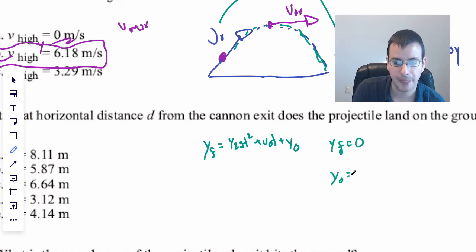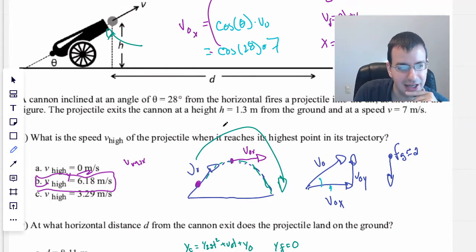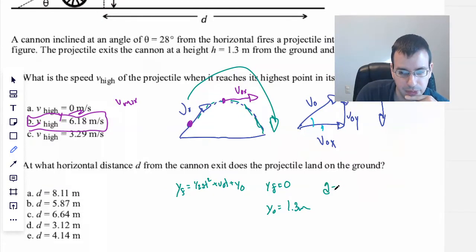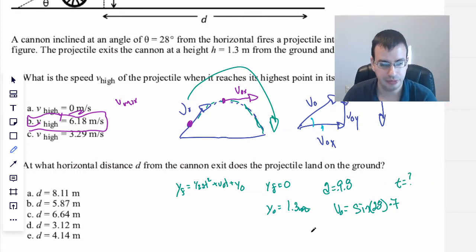So we have our kinematic equations. Now x here just means some sort of dimension, a direction. So we can use this for x or y or z for the most part. So we're going to start by using it for y so that we can find the time of flight. y final equals one half at squared plus v naught t plus y naught. y final, that's going to be the ground, so that's going to be zero.